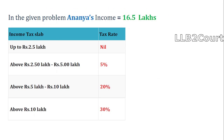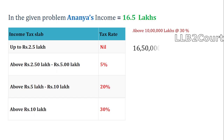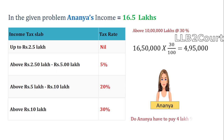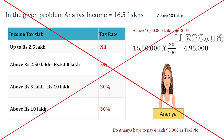In the given problem, Ananya's income is 16.5 lakhs. We will assume Ananya is below 60 years. Since her income is above rupees 10 lakhs, the 30% tax rate is applicable. But if we naively calculate 16 lakh 50,000 into 30% it gives 4,95,000 — and the question is: does Ananya have to pay 4,95,000 as tax? No, this calculation is wrong. So how is it calculated? We will see.